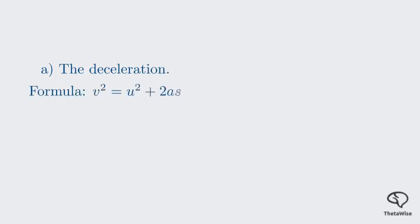We can't use the simple formula V equals U plus at, because we don't know the time T. Instead, we use the equation of motion that relates final velocity, initial velocity, acceleration, and distance. V squared equals U squared plus 2AS, as this is the correct formula to use here.